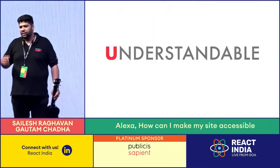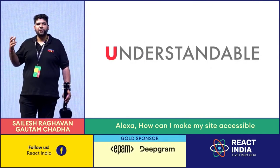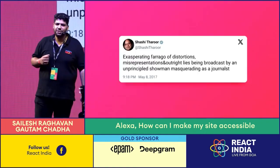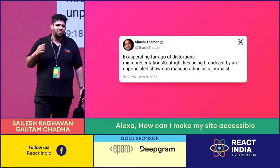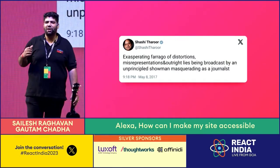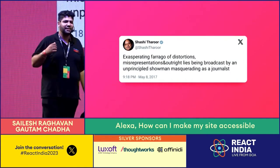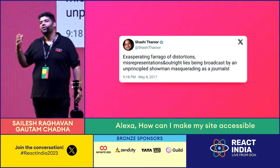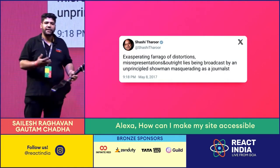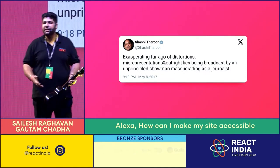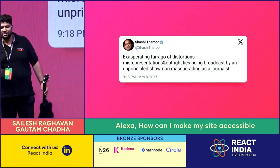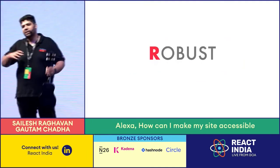The U in POUR stands for Understandable. I found a great example in a tweet from a very famous politician known for his linguistic skills — you need an Oxford dictionary to understand what it means. People with cognitive disabilities encounter that with a lot of websites because the content is not targeted to them. Understanding that your audience may include people with cognitive disabilities, and targeting content for them, is very important.